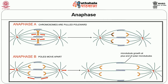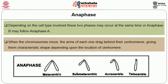At anaphase A, the centromere is pulled towards the spindle poles as the kinetochore microtubules get shorter through depolymerization. At anaphase B, the poles themselves move away from each other as the polar microtubules lengthen. Depending on the cell type, these two phases may occur simultaneously or anaphase B may follow anaphase A. When the chromosomes move, the arms of each one drag behind their centromeres, giving characteristic shapes: V-shaped for metacentric, J-shaped for sub-metacentric, and rod-shaped for telocentric chromosomes.